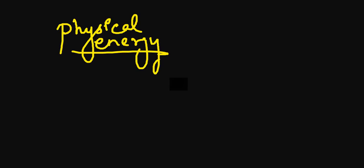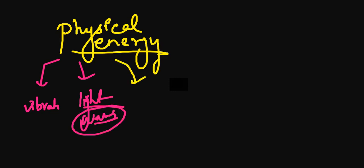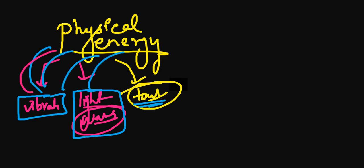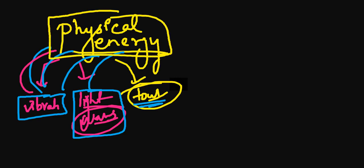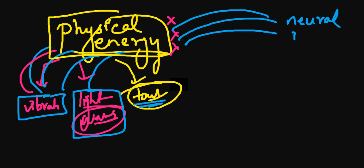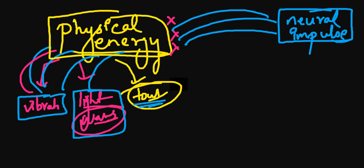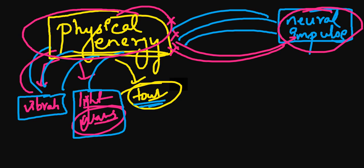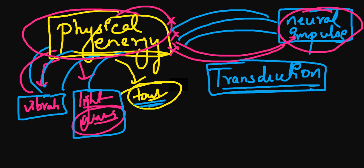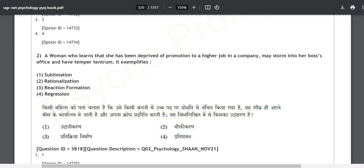Whenever there is physical energy — vibrations from songs, light wavelengths we see, or the touch we feel — these are physical energies such as photons and sound wave amplitudes. Our brain does not understand physical energy directly; it only knows action potentials. The conversion of physical energy to neural impulse is called transduction.